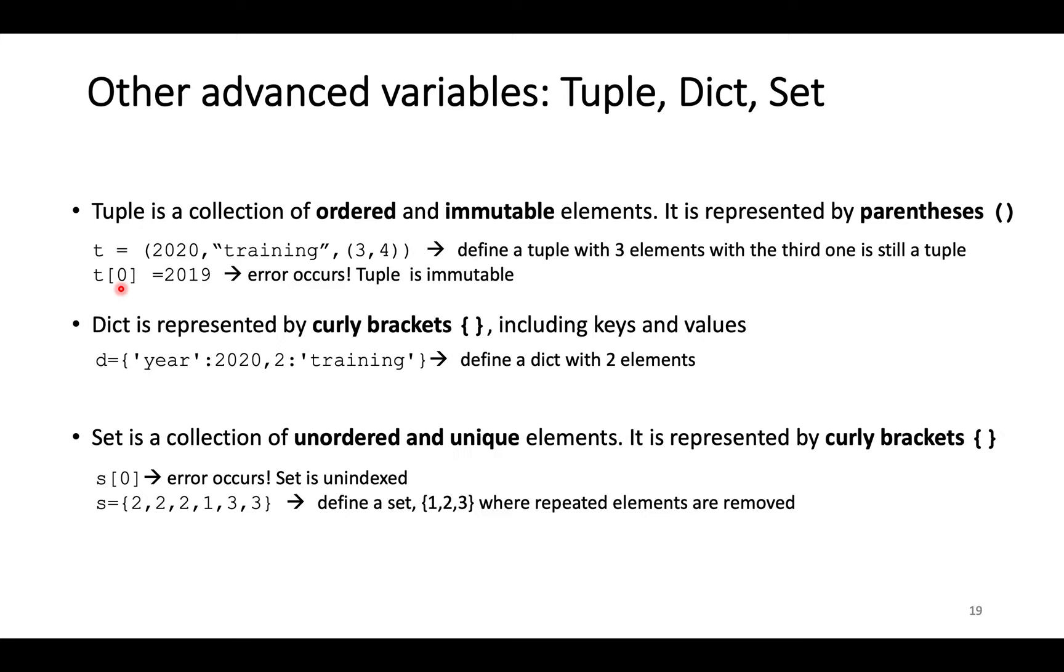The third advanced variable is dict. The elements in dict are indexed by keys rather than by ordered number. Keys in dict are unique and unchangeable. For example, we can retrieve the value 2020 by the key of year.